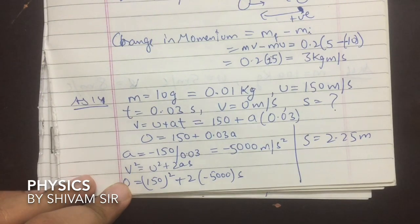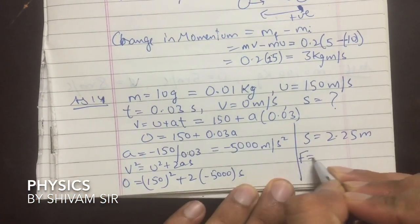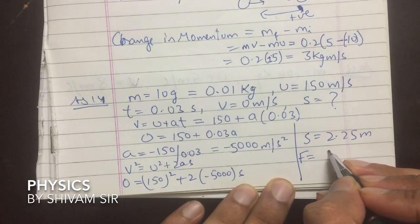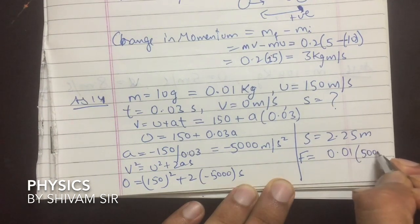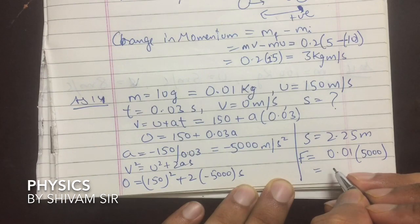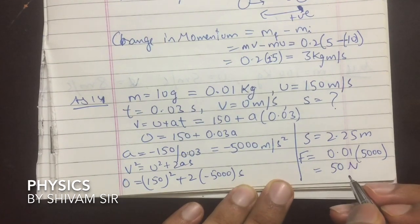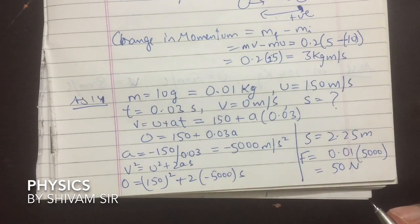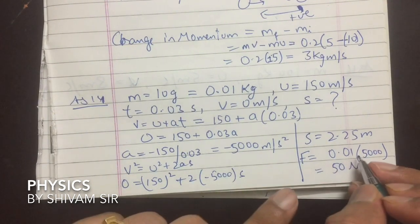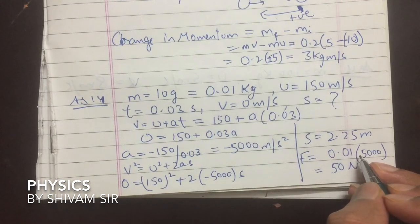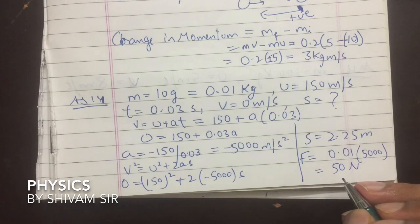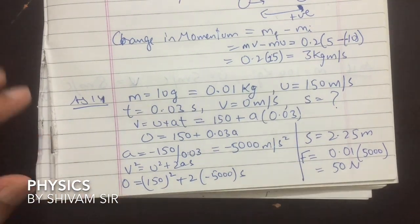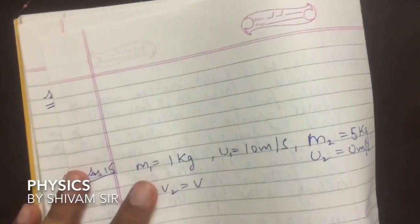Force = ma = 0.01 × 5000 = 50 N. The magnitude of force exerted by the wooden block on the bullet is 50 newton.